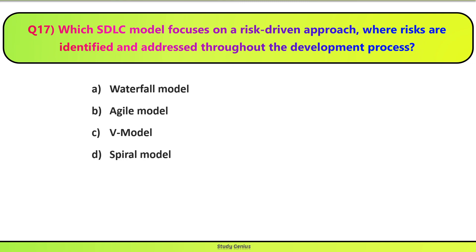Question 17. Which SDLC model focuses on a risk-driven approach, where risks are identified and addressed throughout the development process — Waterfall model, Agile model, V model, or Spiral model? Correct answer is D. Spiral model focuses on a risk-driven approach to software development.